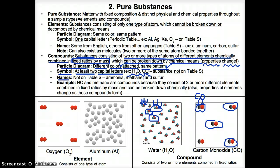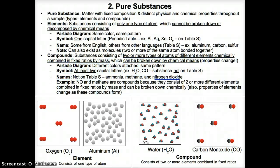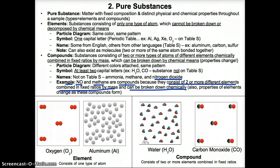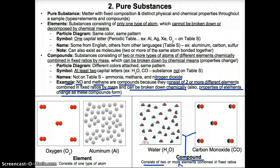In terms of a name, if the substance has a chemistry-like name that's not listed on table S, you'll know you have a compound. For example, ammonia is a chemistry name not listed on table S, so it's a compound. Same thing with methane — it's a chemistry name not listed on table S, so it's a compound. Nitrogen dioxide is also not listed on table S, so it's a compound. Substances like NO and methane are considered compounds because they have two or more different elements combined in fixed ratios by mass, and they can be broken down chemically. Also, the properties of the elements change when these compounds form since they're chemically combined.